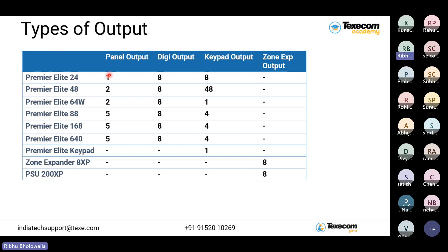Types of outputs. In all these control panels, zone expanders, and keypads, you will get outputs. The Texicom control system has a number of outputs available. We have the control panel, keypads, and zone expanders — in all three, you can get outputs. So if you want to trigger something through any output, it is possible through the control panel output, keypad output, or zone expander. All outputs are programmable whatever way you want.